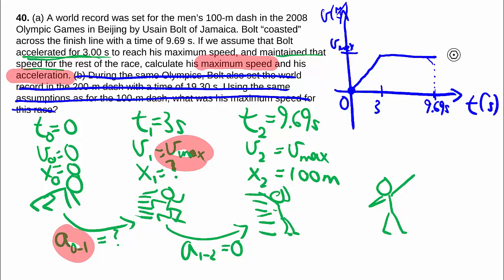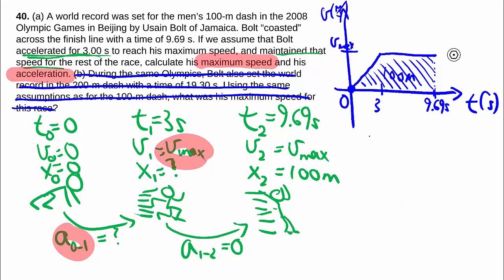And all together, the amount of distance you cover, which as you may know is the area under the curve of the velocity versus time graph, would be 100 meters. So then the key idea is, because the acceleration is changing between here and here, we have to treat zero to three seconds completely separate from between three to 9.69 seconds.